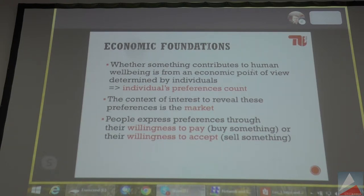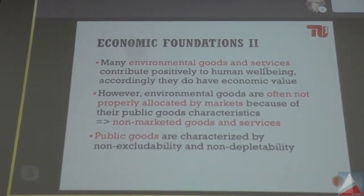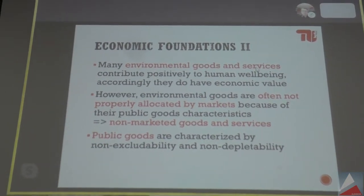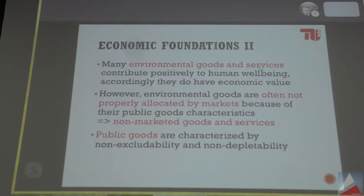The problem with markets is that many goods, and especially landscapes, are not so-called private goods that are normally traded on markets. Think about a bottle of wine — the characteristics of private goods are that you can exclude other people from using them. If you buy a bottle of wine, you can just say you paid the money, so it's yours and you don't have to share it. But environmental goods often do not have these characteristics of private goods.